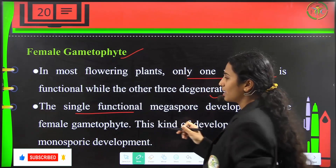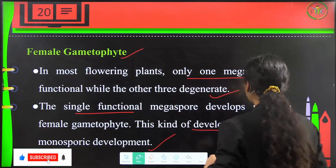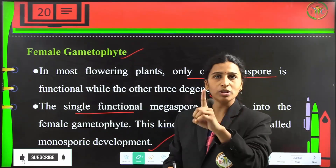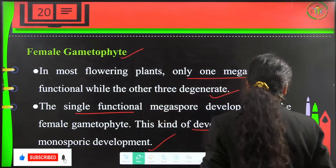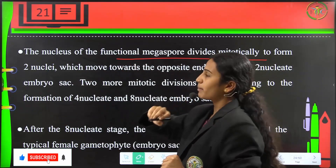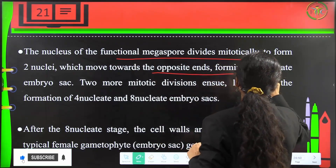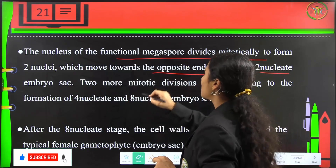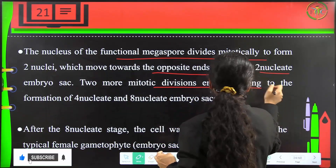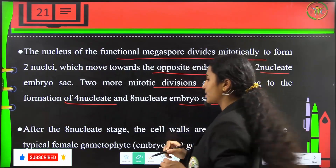The single functional megaspore will develop into the female gametophyte, and this kind of development is called monosporic. The nucleus of the functional megaspore divides mitotically to become two nuclei, which move towards opposite ends forming a two-nucleate embryo sac. Two more mitotic divisions lead to four-nucleate and then eight-nucleate embryo sacs.